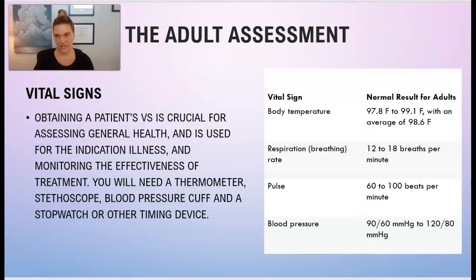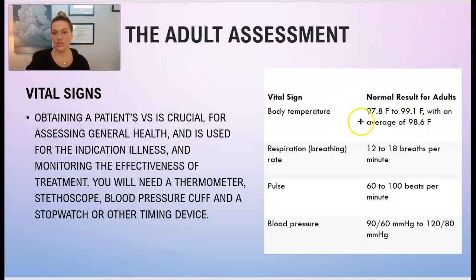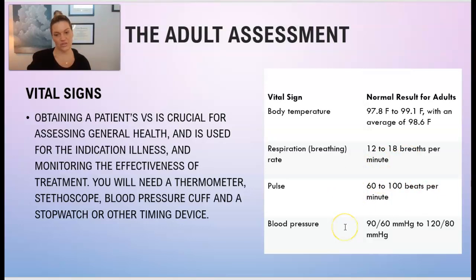Vital signs are crucial for assessing general health and are also used to help indicate illness and monitor effectiveness of treatment. You'll need your thermometer, a stethoscope, a blood pressure cuff, and a stopwatch or timing device to measure respirations. You can see on this chart what a normal temperature, respiration rate, pulse, and blood pressure are for an adult.